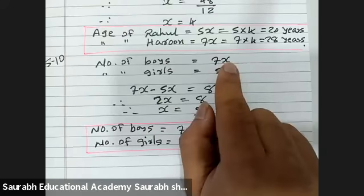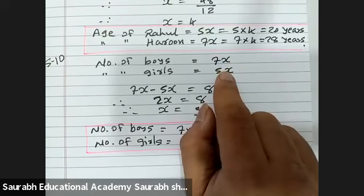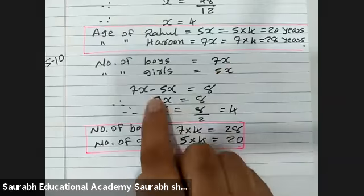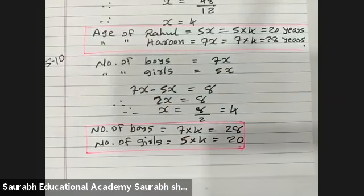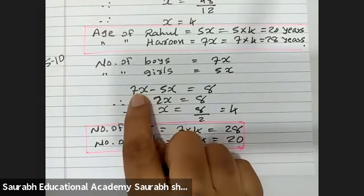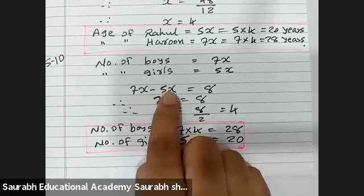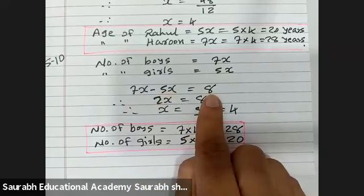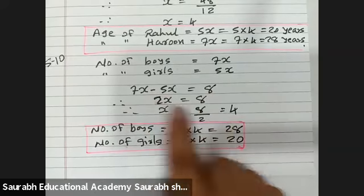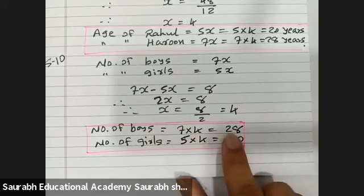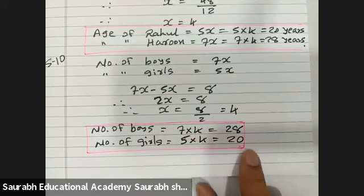To recap: the number of boys and girls are in the ratio 7 to 5, so we assume 7x and 5x. Boys are 8 more than girls, so 7x minus 5x equals 8. Therefore x equals 4. Boys: 7 into 4 equals 28. Girls: 5 into 4 equals 20.